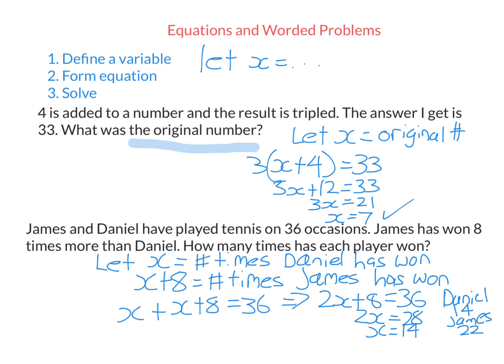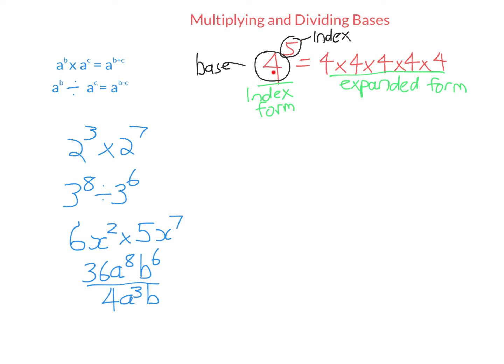Let's now move on to indices. We read something like 4 to the power of 5 as the base being 4 and the power or index being 5 — the plural of index is indices. This means you multiply this number by itself this many times. Writing it out is called expanded form, and writing it as something to the power of something is index form. There are 4 index laws you need to know. The first: when you multiply bases, you add the powers and keep the same base. The second: when you divide bases, you keep the same base and subtract the powers.